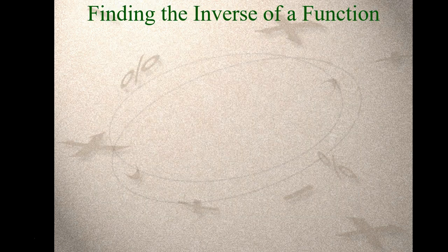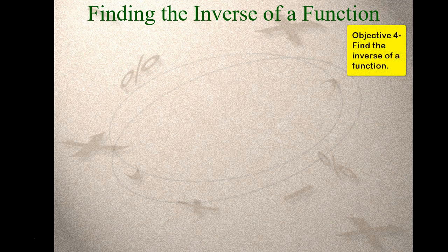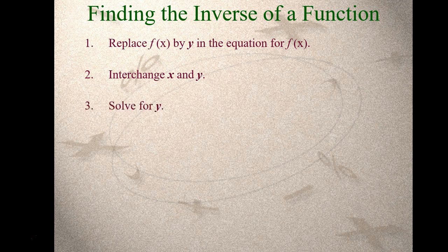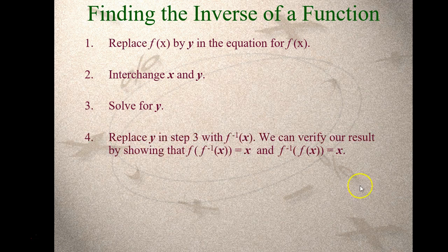Now let's look at finding an inverse — these are important steps you'll want to know. Step one: replace f of x with a y. Step two: interchange or swap the x and the y. Step three: take your new equation and solve for y — that's going to be your inverse function. Step four: replace that y with the f inverse notation, f inverse of x. We can verify by showing that f composed with f inverse and f inverse composed with f both simplify to x.